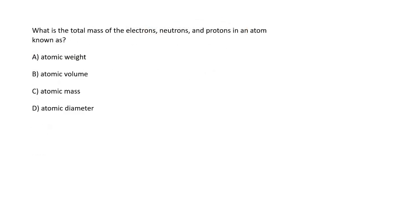Next: What is the total mass of electrons, neutrons and protons in an atom? Obviously, the sum of all particles' mass in an atom becomes its mass. Therefore, the right option will be option C, atomic mass.